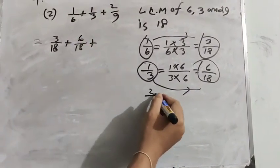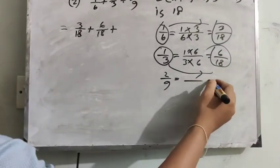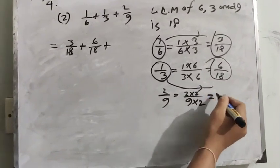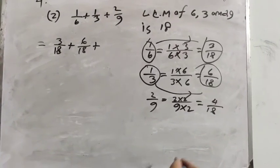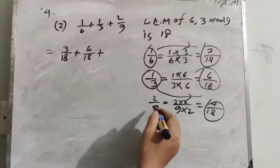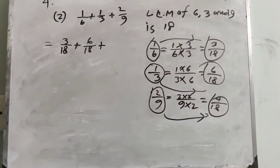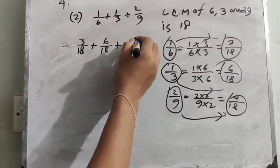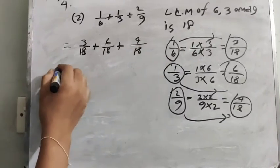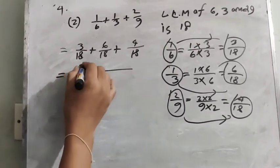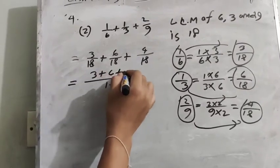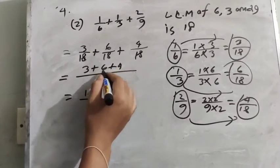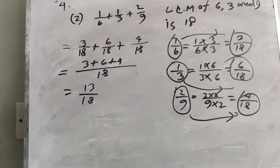The third fraction is 2/9. So 9 multiplied by 2 equals 18, and 2 multiplied by 2 equals 4. So 4/18 is the equivalent fraction of 2/9. Now we add 3 plus 6 plus 4, which equals 13. So the answer is 13/18.